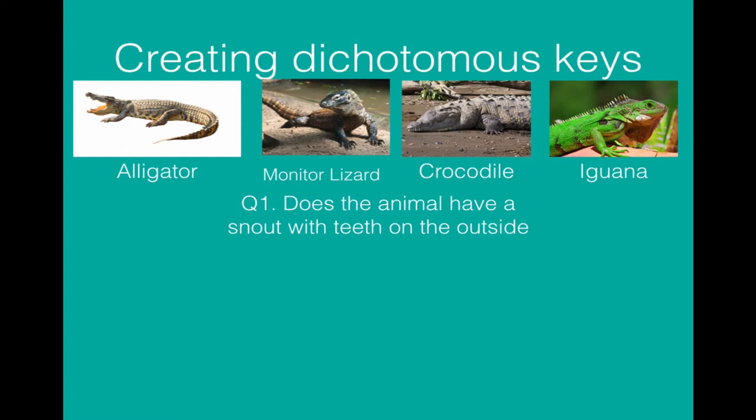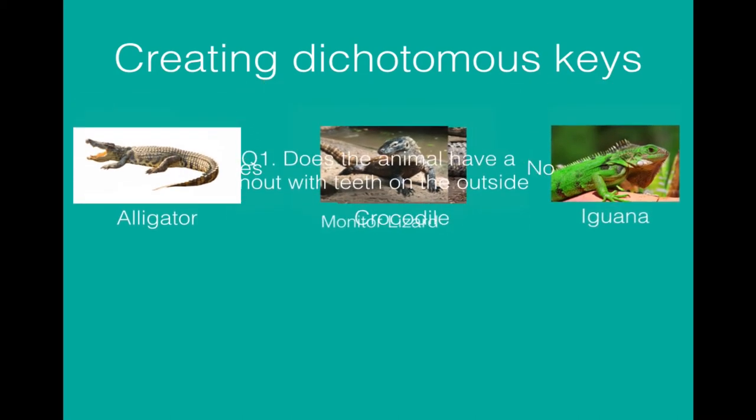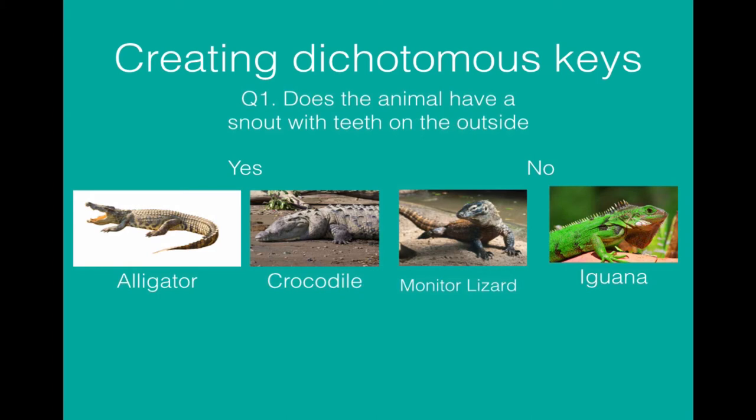So first one that might split it in half as an example is does the animal have a snout with teeth on the outside. Now the alligator and the crocodile do but the monitor lizard and the iguana don't. So that splits the groups in half.